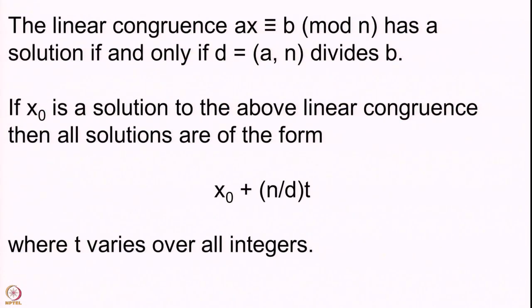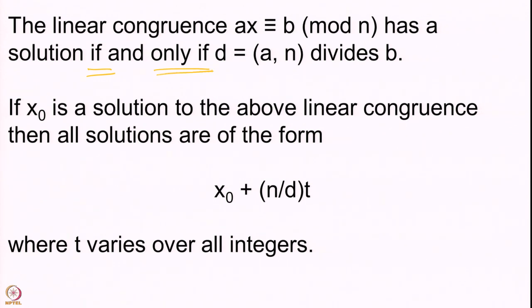The linear congruence ax congruent to b mod n has a solution if and only if d, which is gcd(a, n), divides b. There are two directions to proving this. The first direction: the congruence has a solution if d divides b. We assume d divides b and prove the congruence has a solution. In the other direction, the congruence has a solution only if d divides b. These are the two directions which we have already proved.